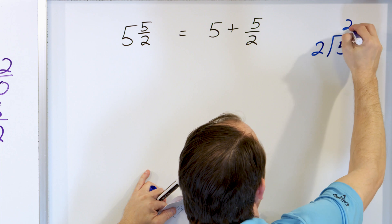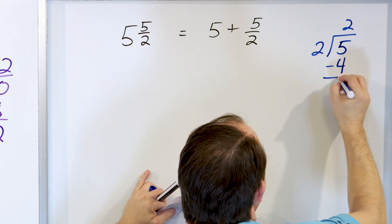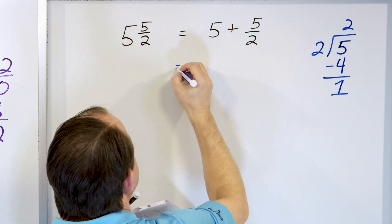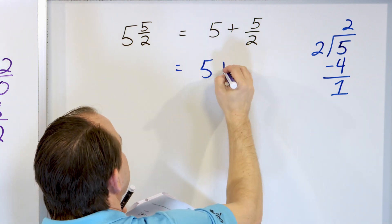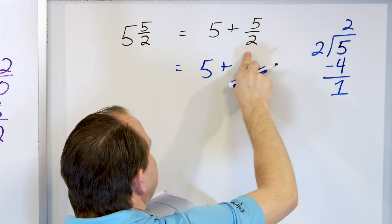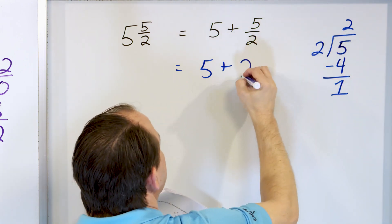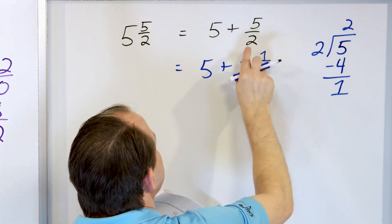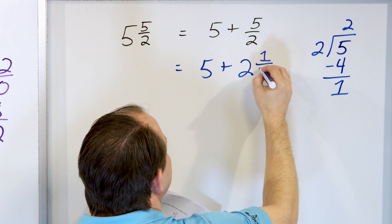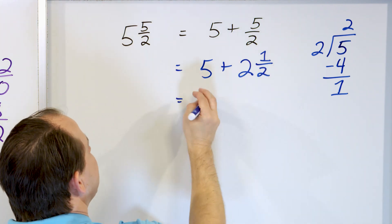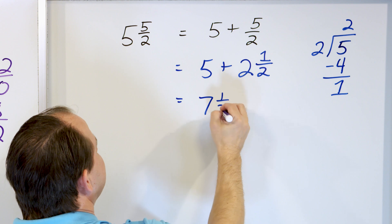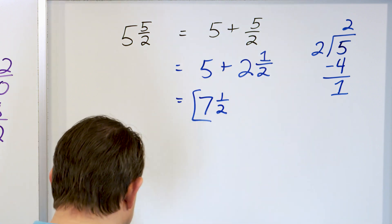2 times 2 is 4, that's as close as I can get. Subtract, get a remainder of 1. So this works out to be 5 from here plus this division. When it converts to mixed number, it goes 2 whole times. Remainder of 1 cut into halves, so it's 2 and a half. And then 5 plus 2 is 7, and then I end up with 7 and a half. That is the final answer.